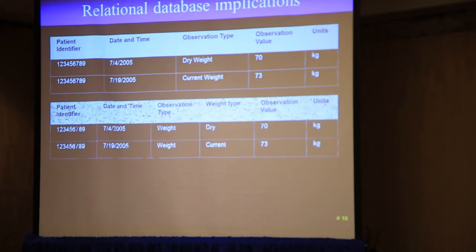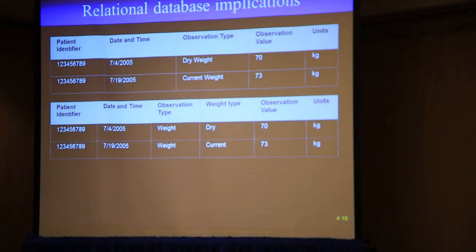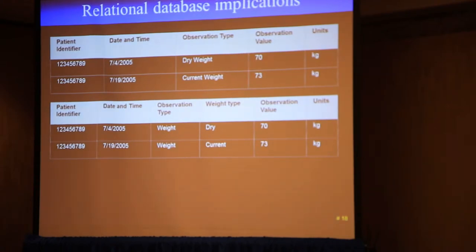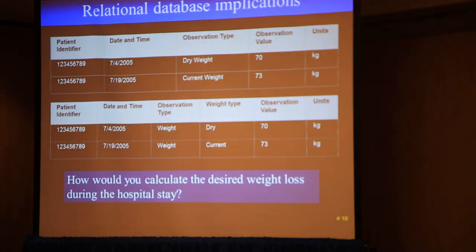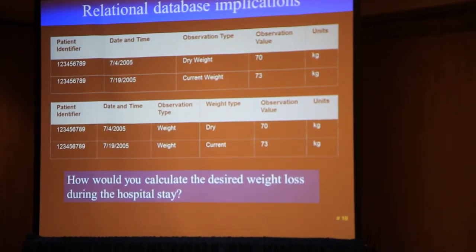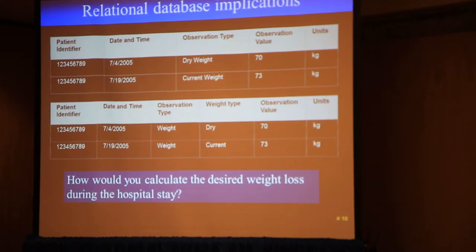If you put that in — and you could do this as objects or any kind of database representation — the point is this: if you're trying to create the kind of applications Josh was talking about, you need to know the difference between those two models. It has to do with how you query and calculate against the information. In a classic SQL query, you would say: for this patient whose number ends in seven, eight, nine, find me observations where observation type is dry weight, then give me the value and units of measure. I'm going to find the dry weights, then find the current weight, and do a subtraction.